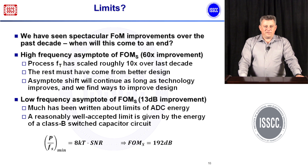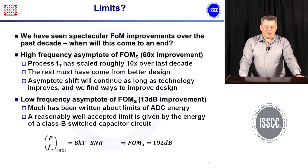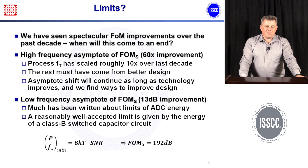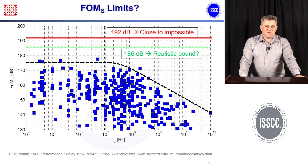The low-frequency asymptote is more complicated because we are running into fundamental physics. One way to assess this is to evaluate the minimum possible energy for a data conversion. A well-accepted proxy is the energy to process a single sample with a class-B switched-capacitor circuit: 8kT × SNR, where k is Boltzmann's constant and T is temperature, corresponding to a figure of merit of 192 dB. We are currently approaching 180 dB, and perhaps the future will reach 186 dB, but going beyond that will be very difficult because real circuits are substantially more complex than the idealized limit.